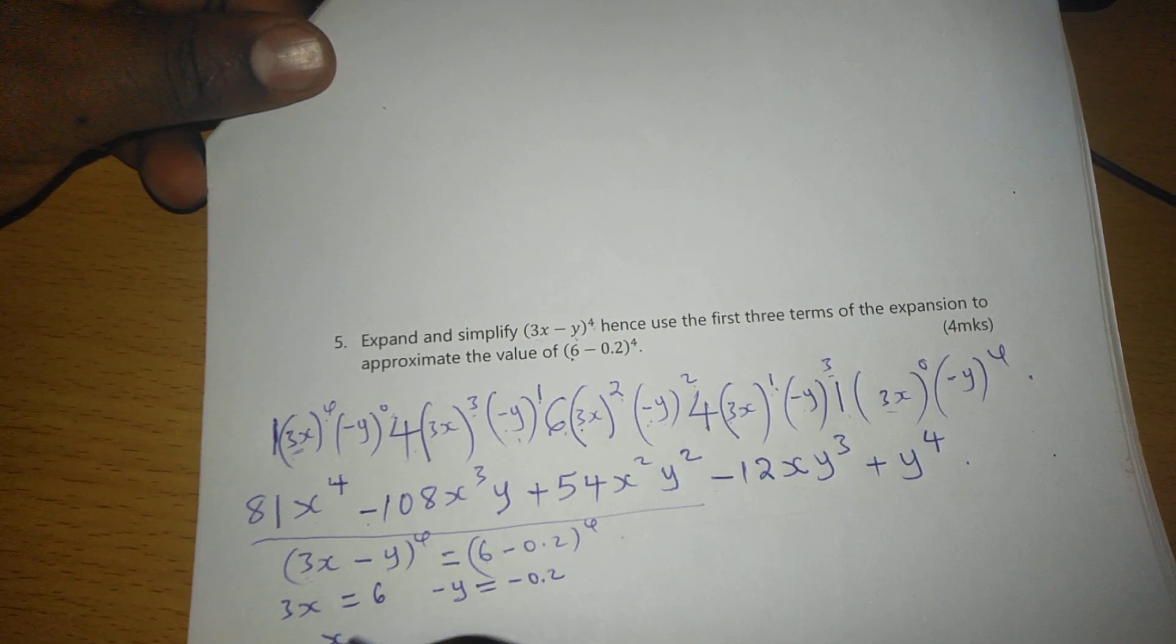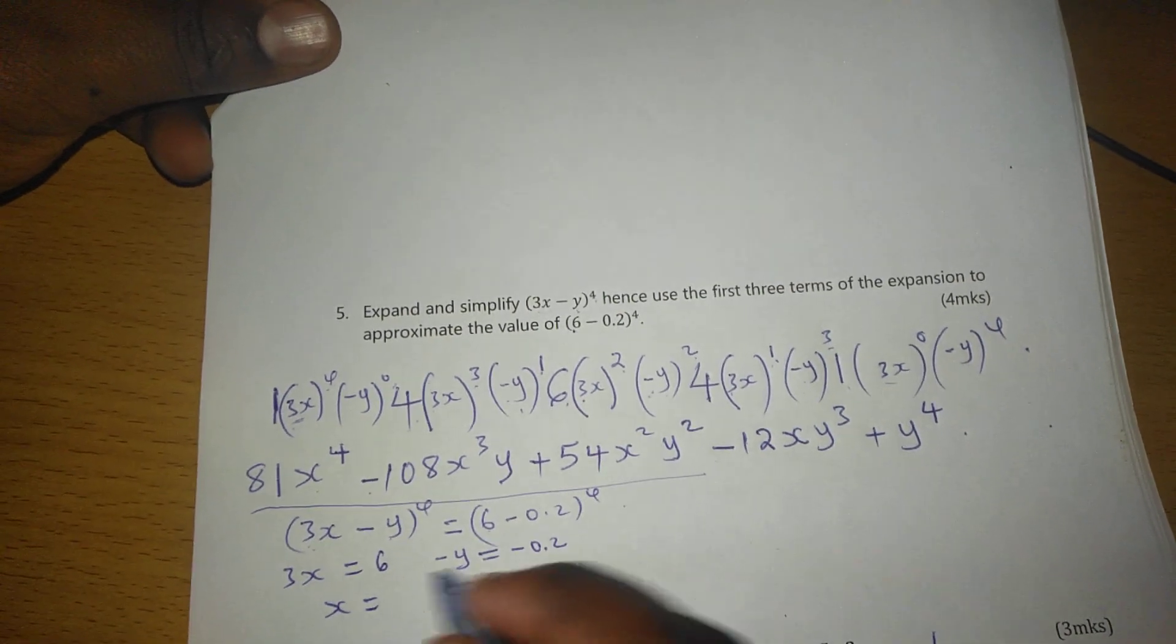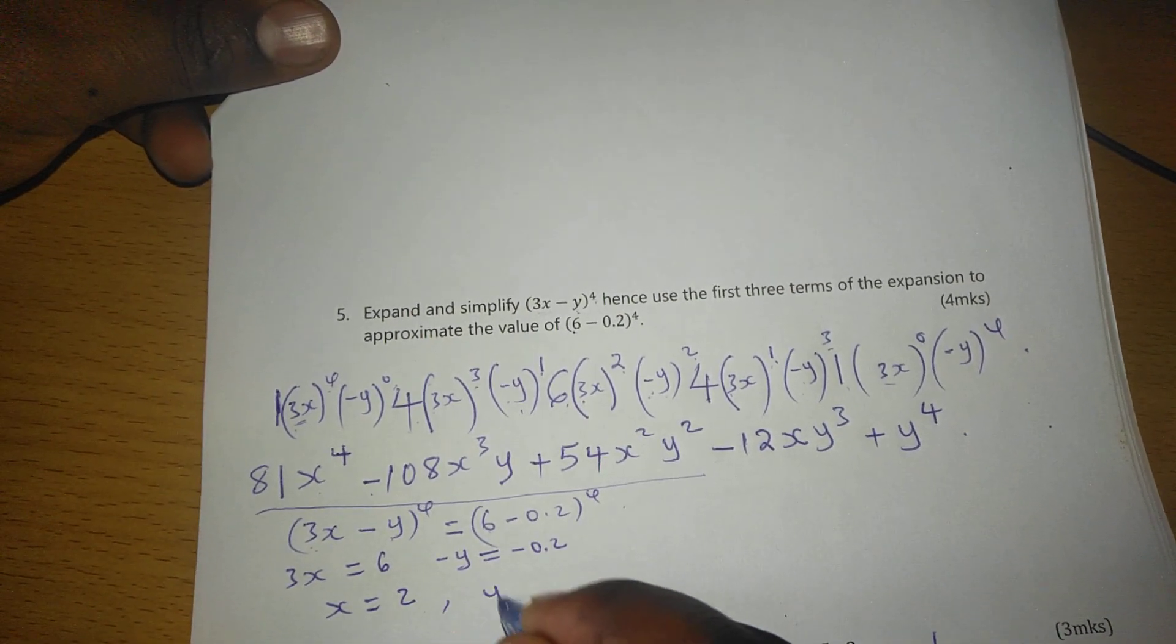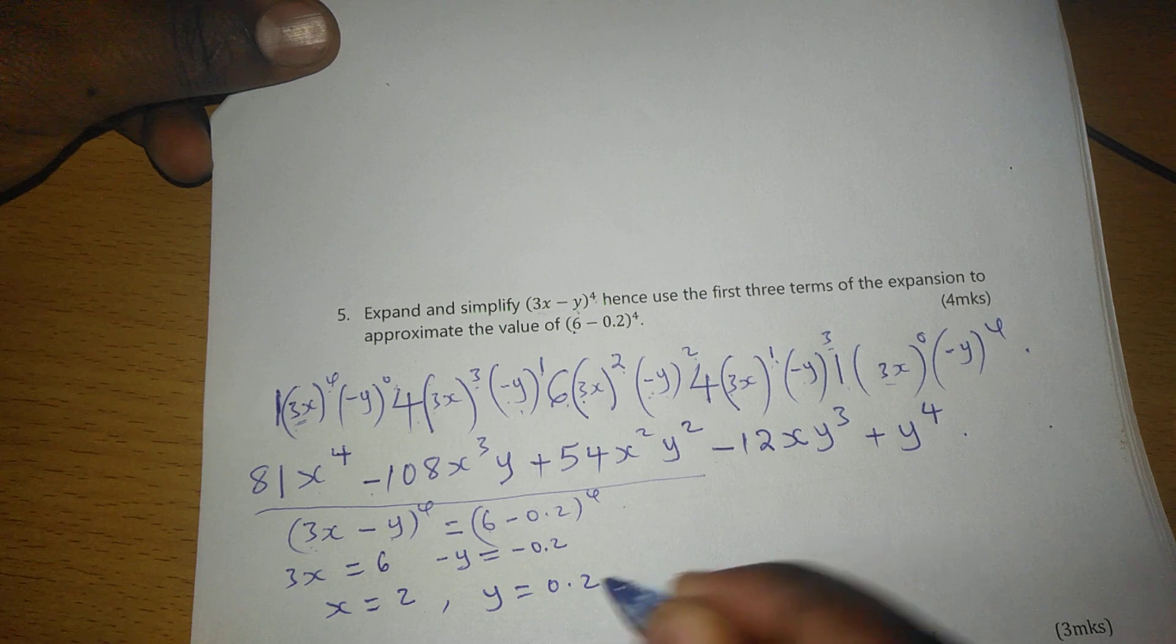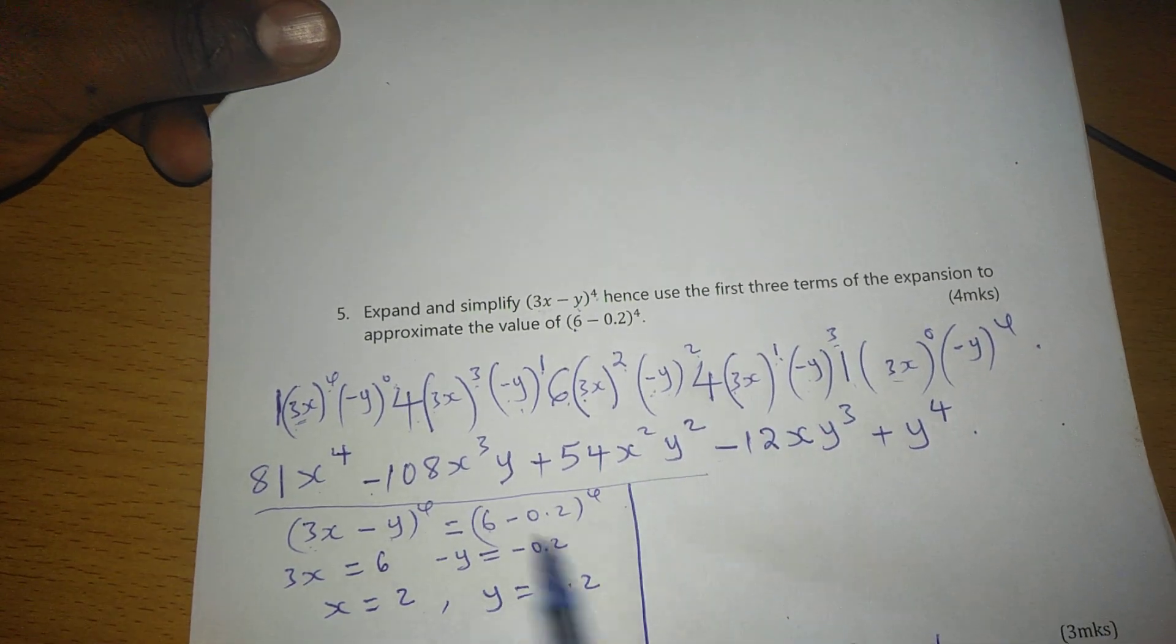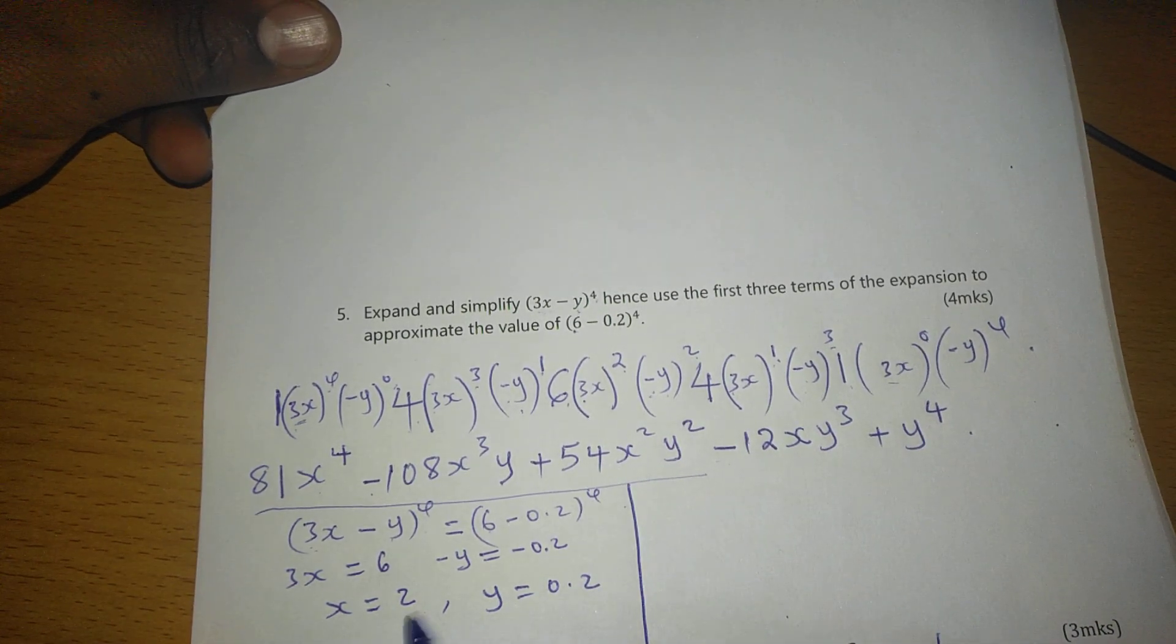And with this, we can say x equals 2. When we divide by 3, x becomes 2 and y becomes 0.2.